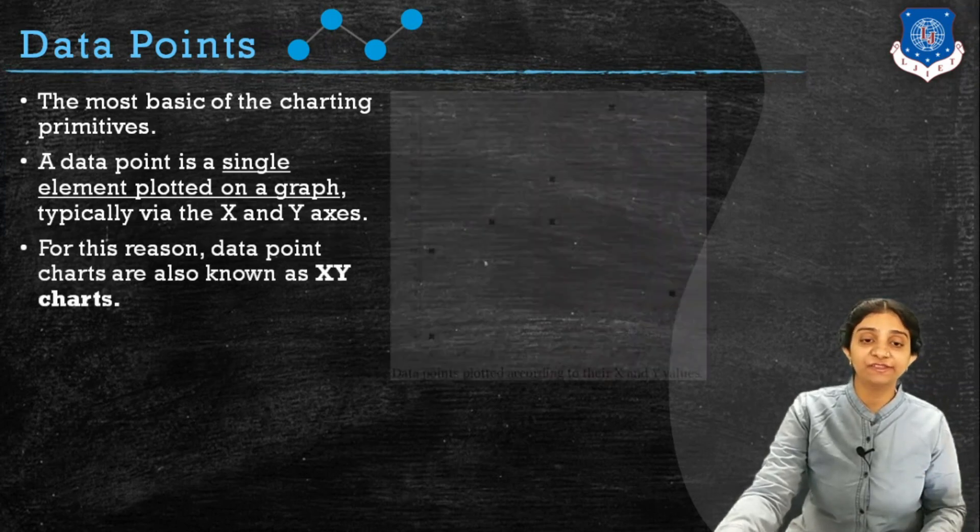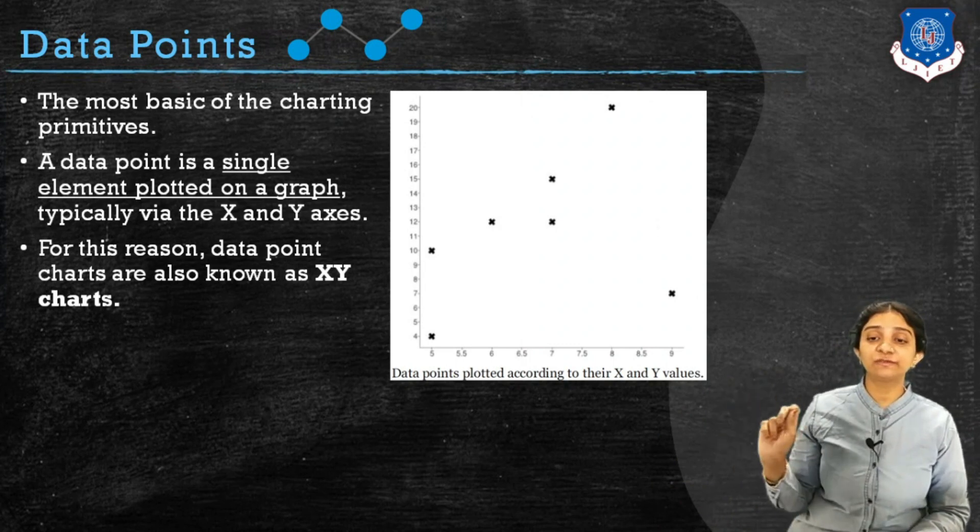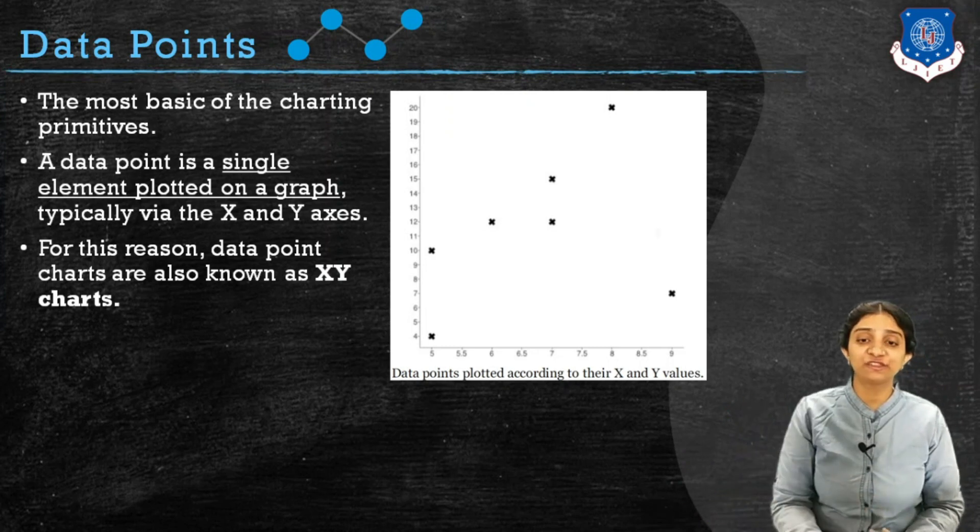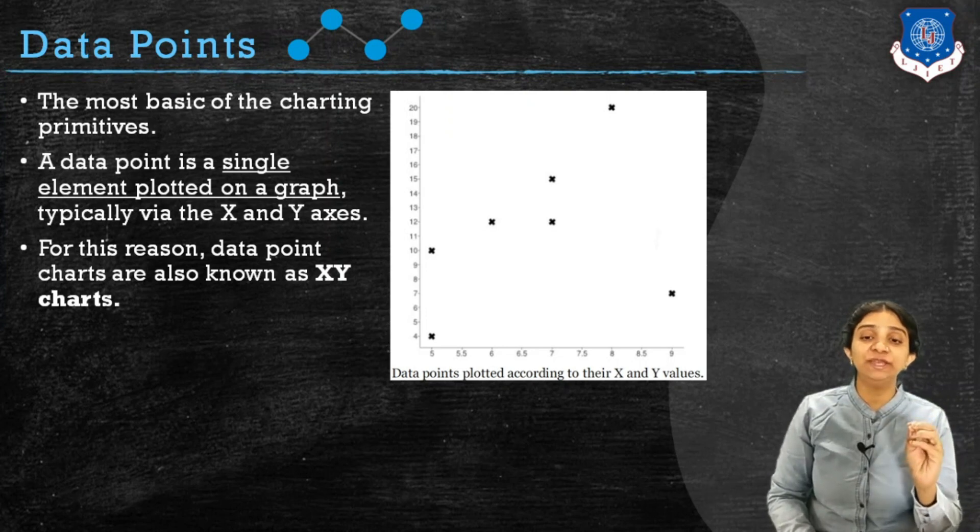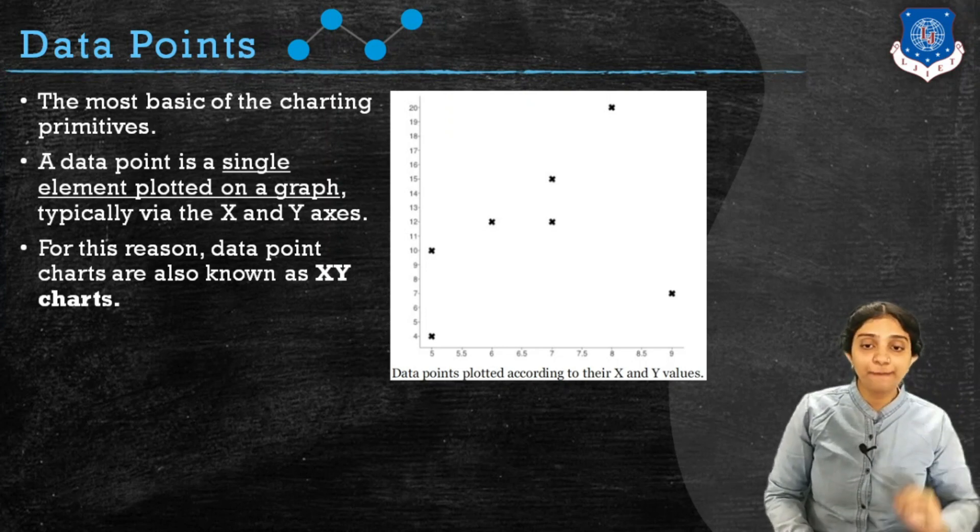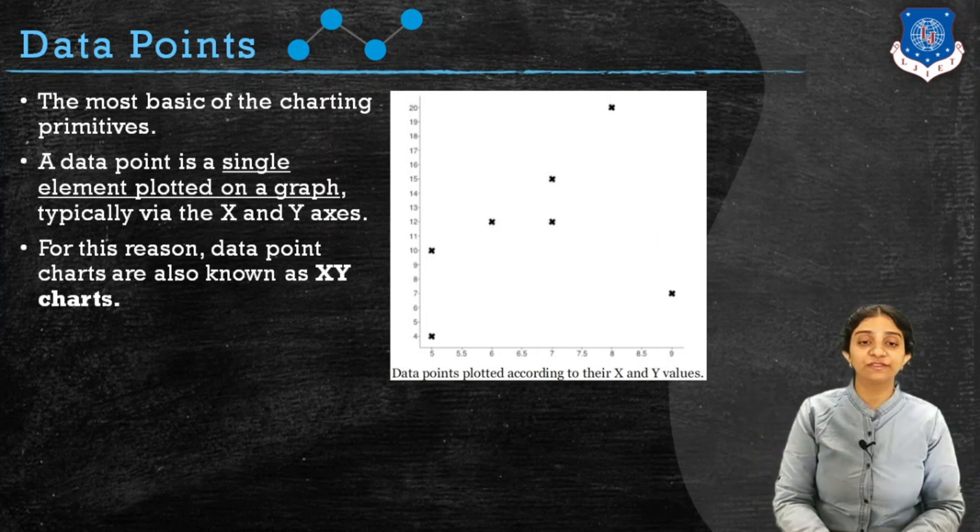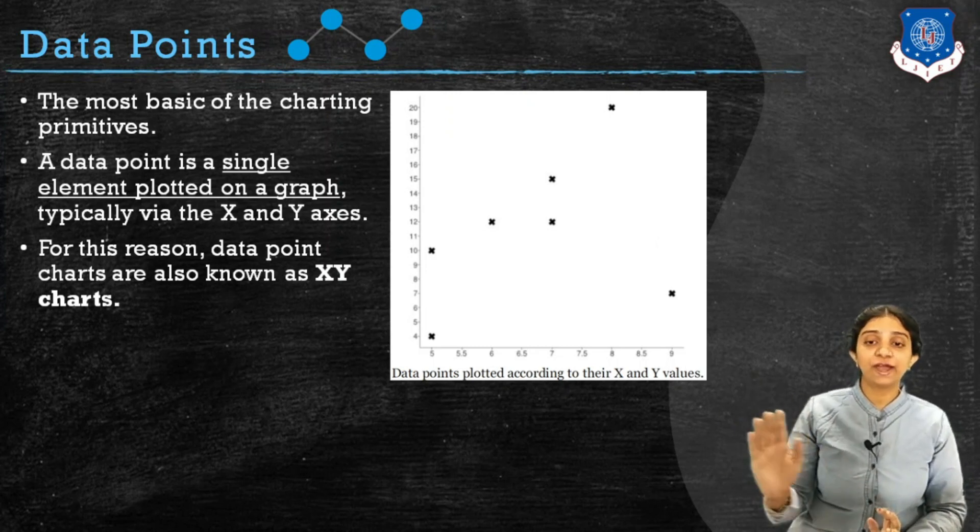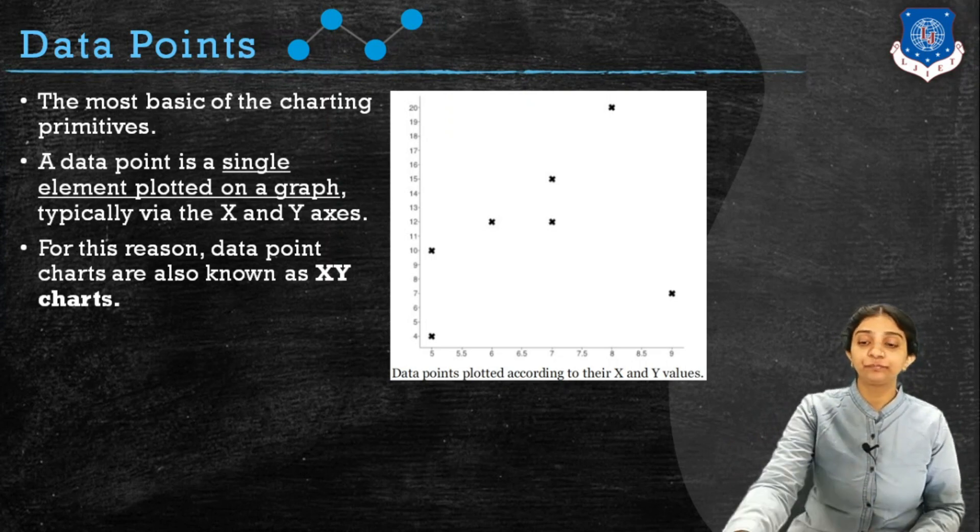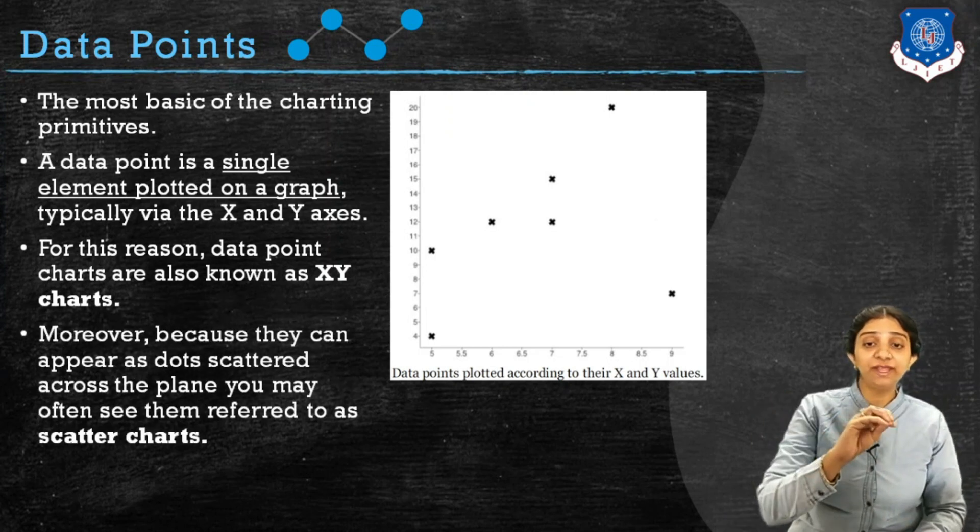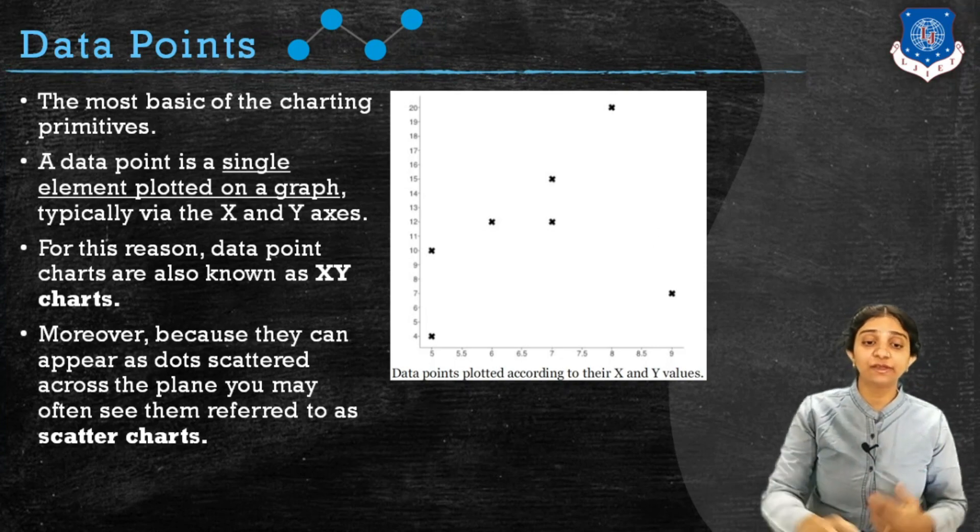Having X and Y axis, for example, this particular chart has an X axis showing numerical values and Y axis also showing numerical values. For some X values there are particular Y values which can be represented by a single data point marked with an X. Because they are plotted on X and Y axis, they are also called XY charts. Since they are appearing like dots scattered over a plane, they are also referred as scatter charts.